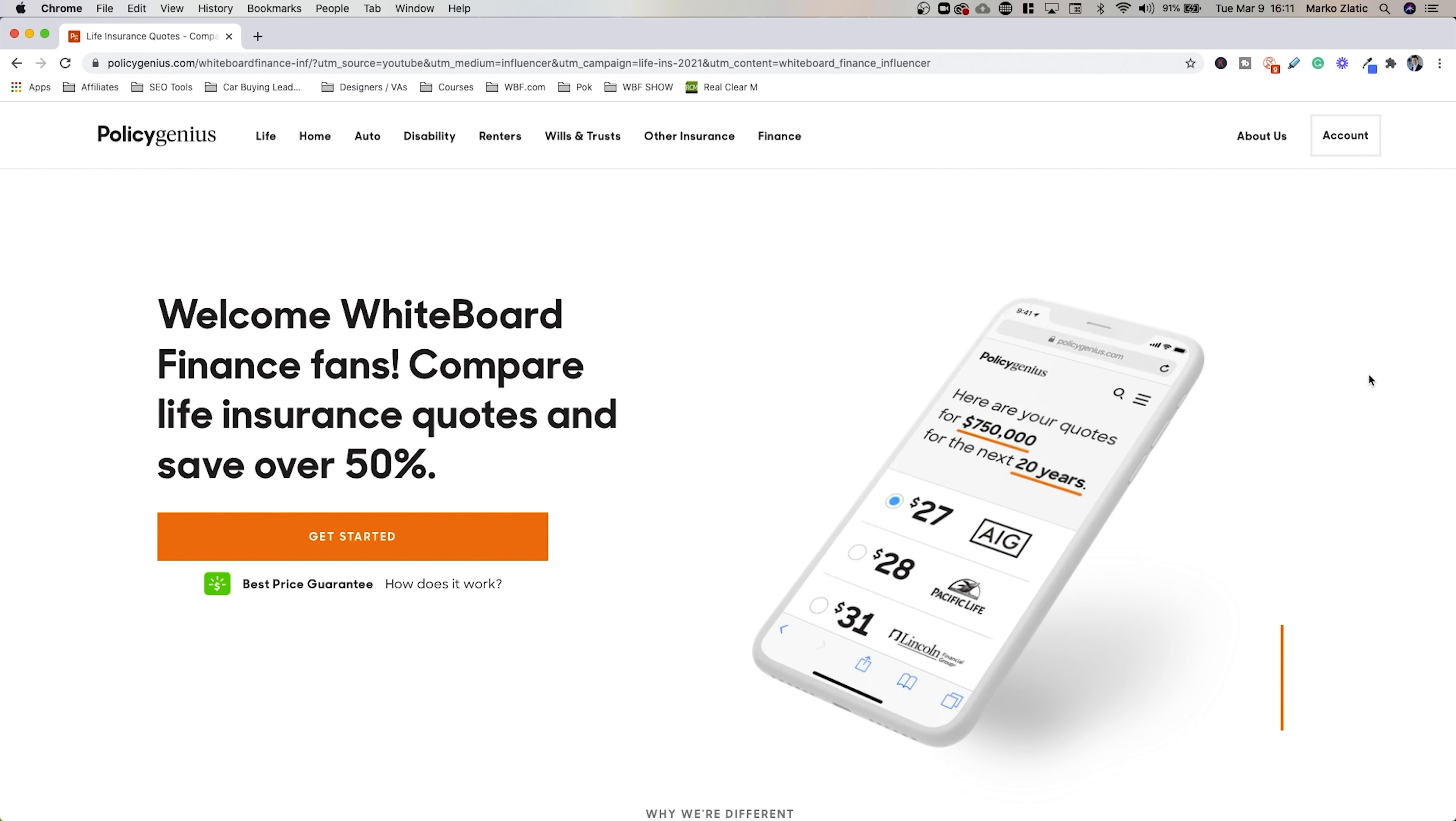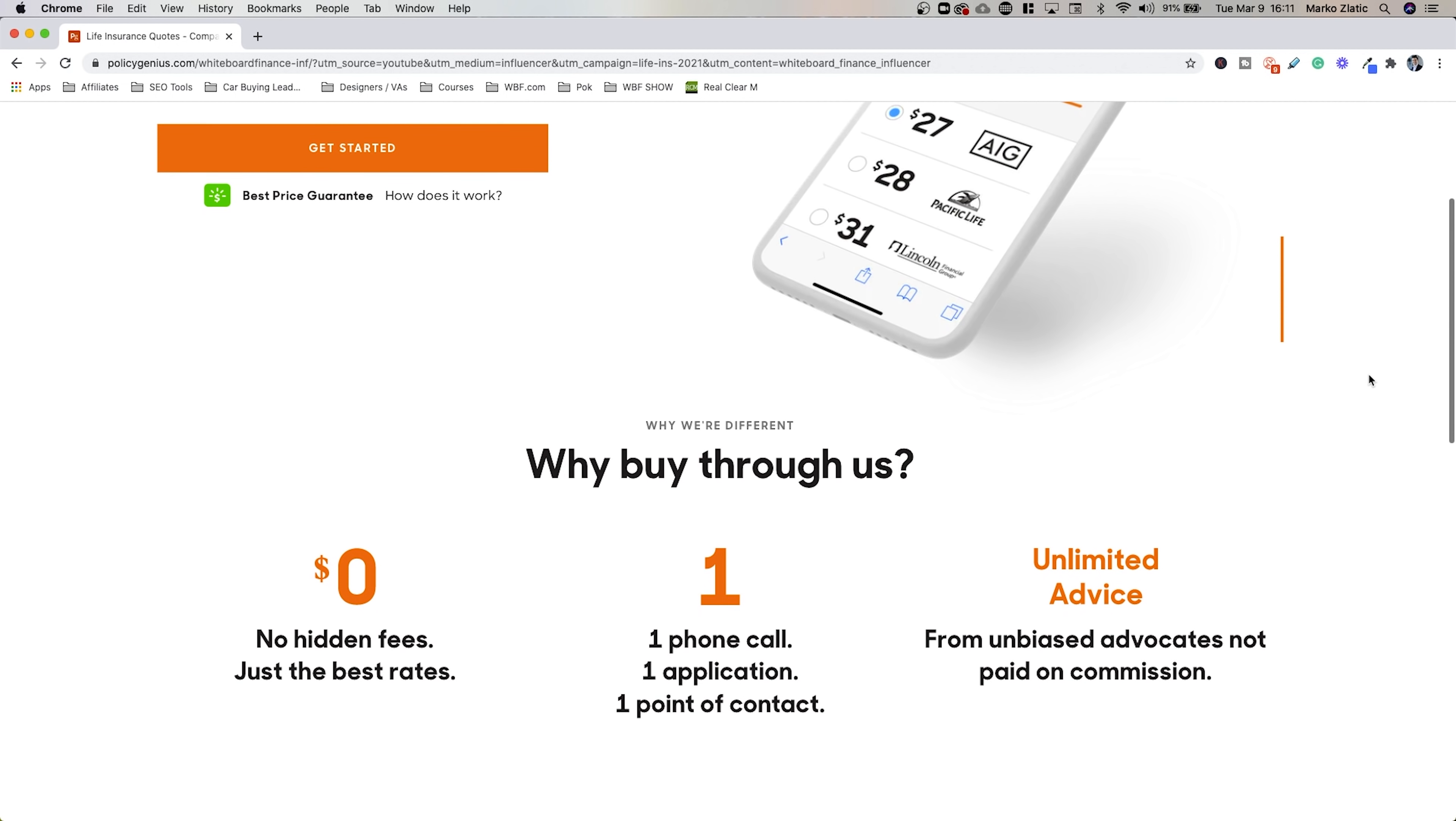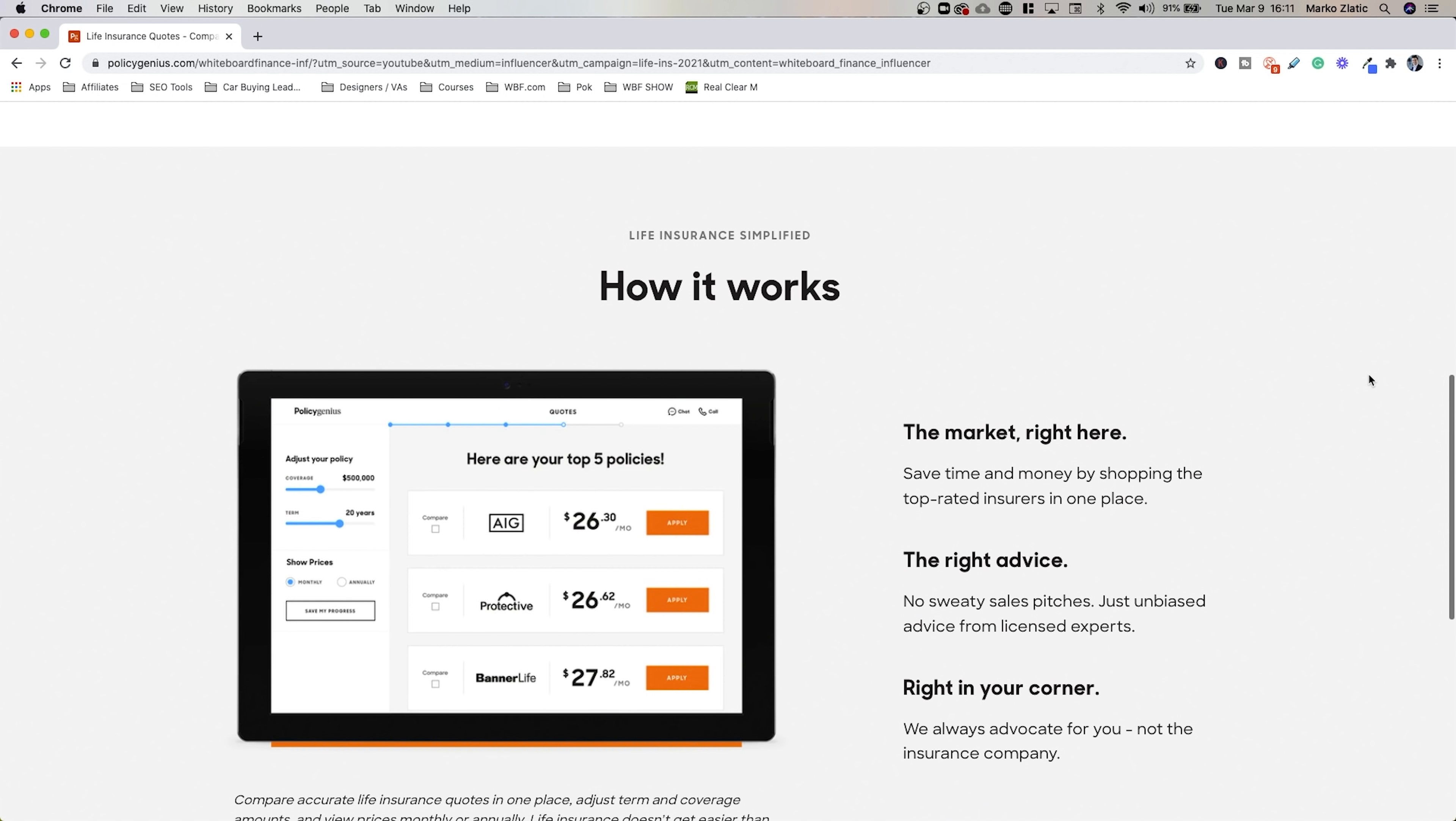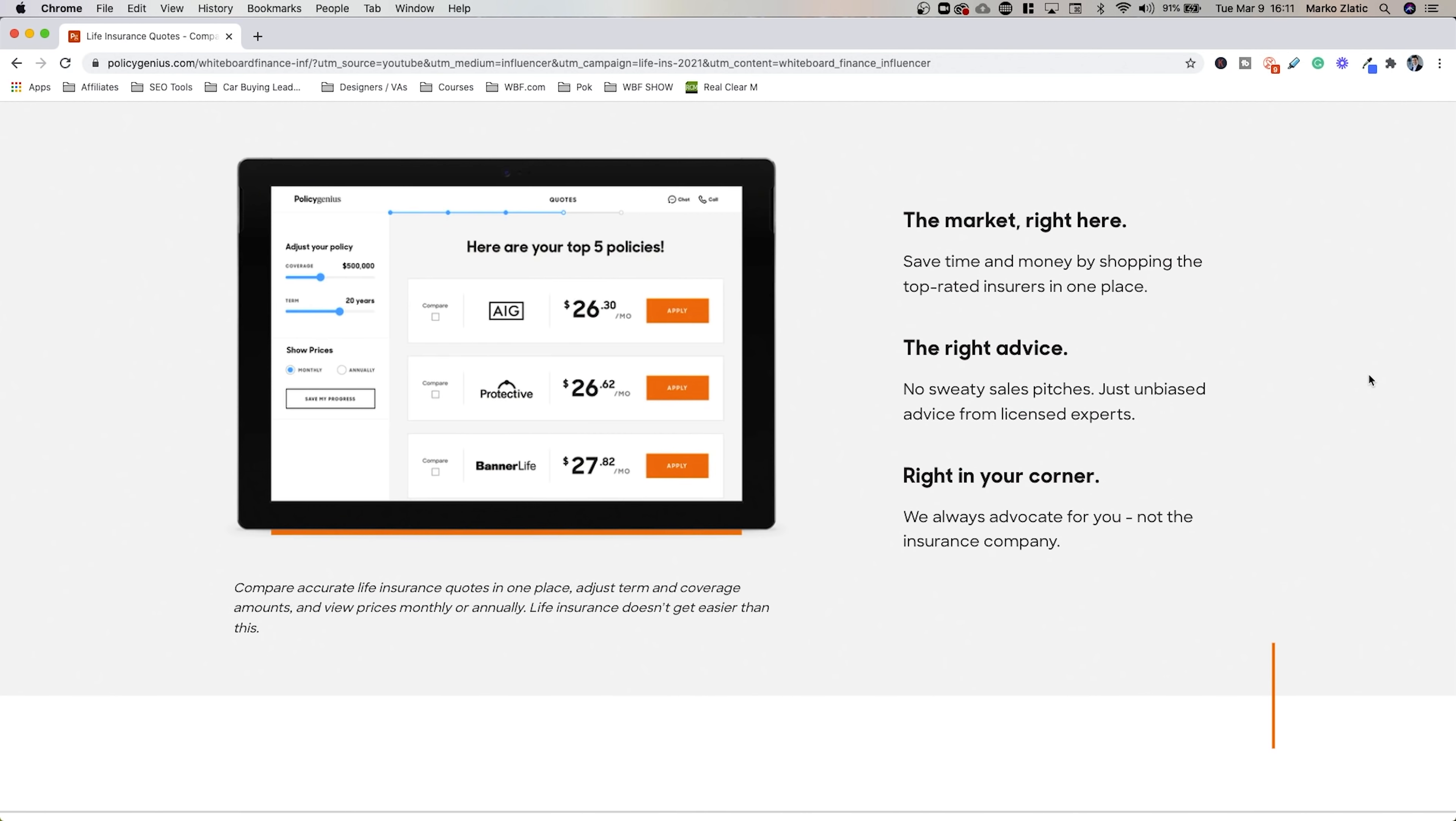PolicyGenius is an insurance marketplace, not an insurance company. With PolicyGenius, you can easily apply online and compare your quotes all in one place. PolicyGenius never sells your information to other companies like other companies may do. And you can save 50% or more on life insurance by comparing quotes with PolicyGenius. You can also save $1,300 or more per year by using PolicyGenius to compare life insurance policies. So I personally feel that it's very important to have life insurance, especially if you have loved ones or dependents who rely on your income for their well-being. If someone needs to put food in their stomach or shelter over their head based on your income, life insurance is a must in my opinion.